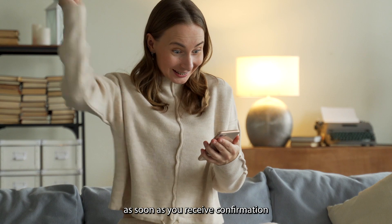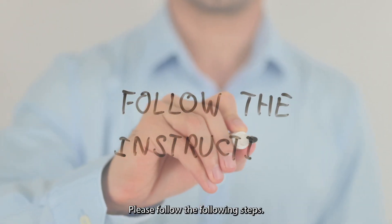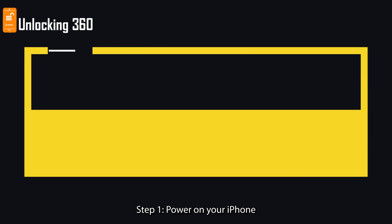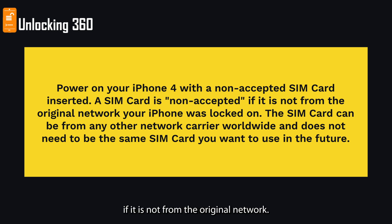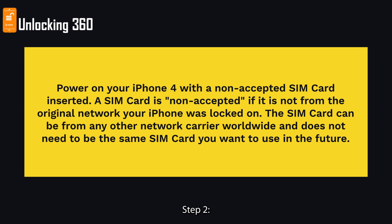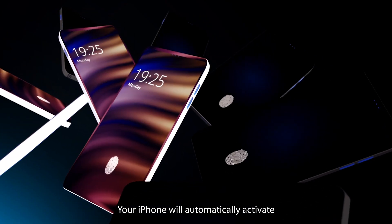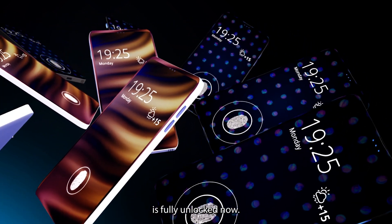As soon as you receive confirmation that the unlock has been applied to your iPhone, please follow these steps. Step 1: Power on your iPhone with a non-accepted SIM card inserted. A SIM card is non-accepted if it is not from the original network your iPhone was locked to. The SIM card can be from any other network carrier worldwide and does not need to be the same SIM card you want to use in the future. Step 2: Your iPhone will automatically activate with your new SIM card. That means your iPhone is fully unlocked now.